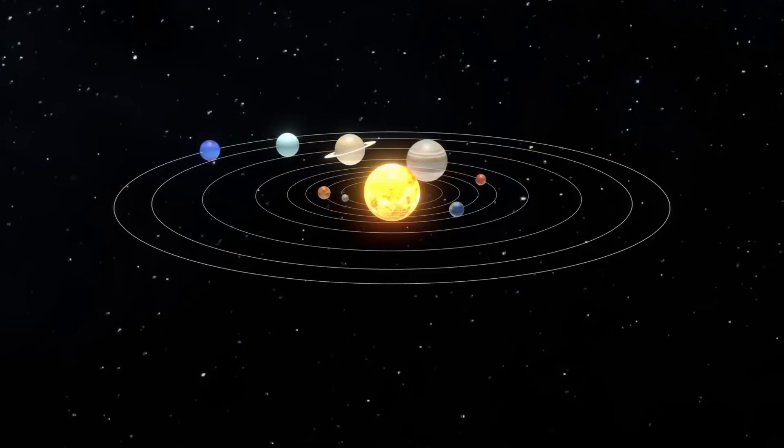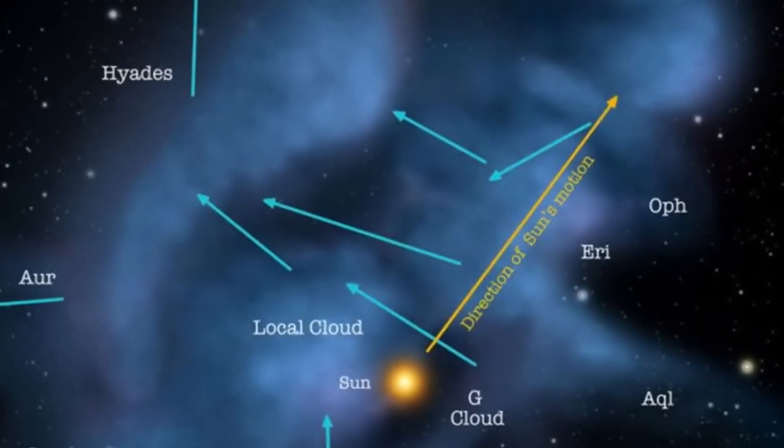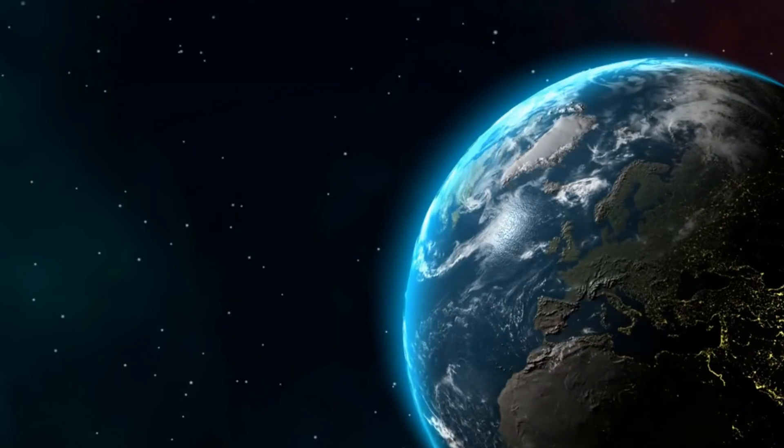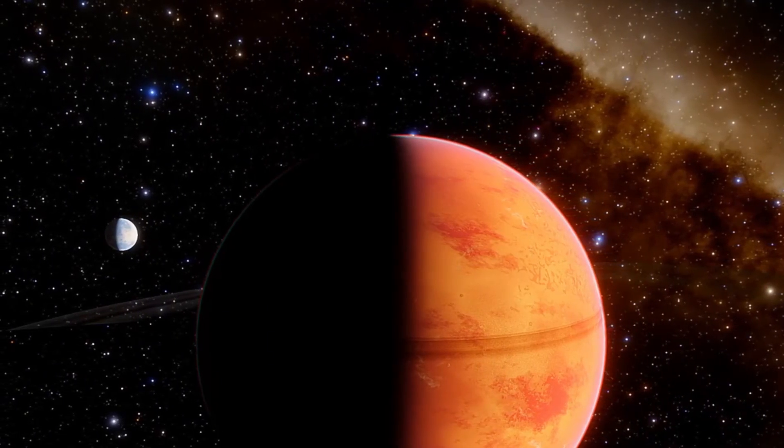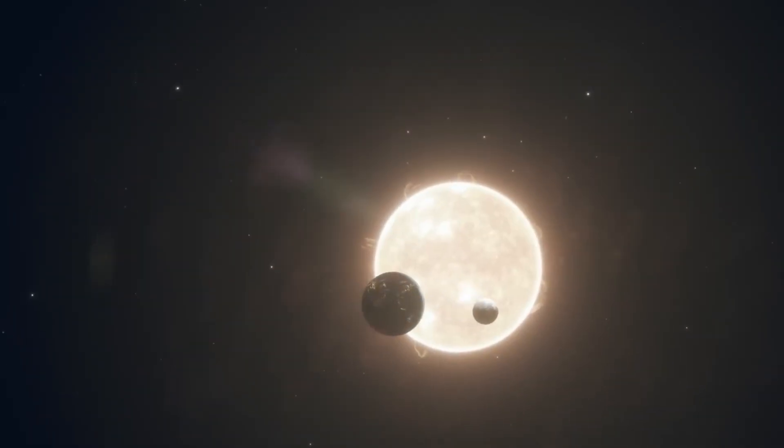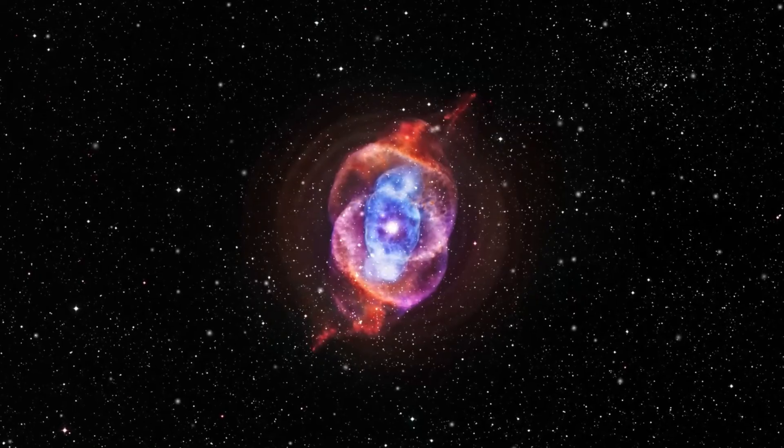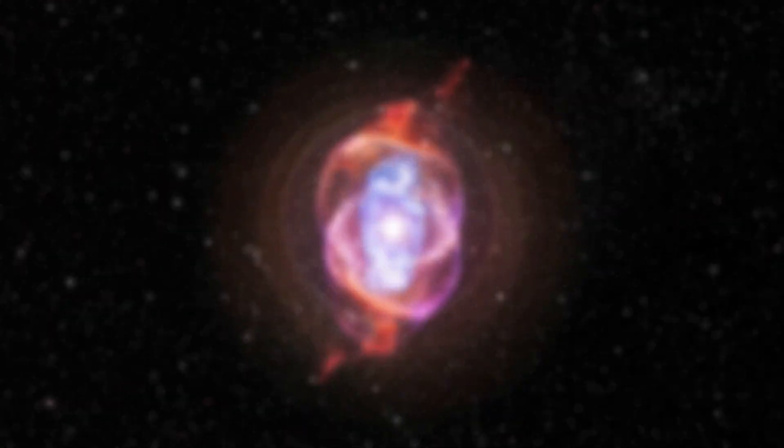If the majority of our solar system's volume consists of these spherical structures extending far above and below the planetary plane, then our conventional understanding is not just incomplete, it's fundamentally misleading. The flat disk represents only a tiny fraction of our cosmic neighborhood, while the vast majority extends in three dimensions all around us. This isn't just an academic distinction. It completely transforms how we should understand our place in the cosmos and raises serious questions about what else might be present in these vast, largely unexplored regions.